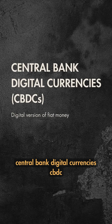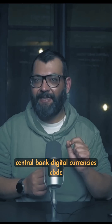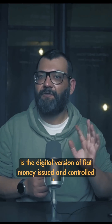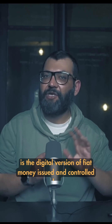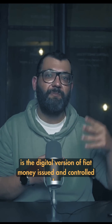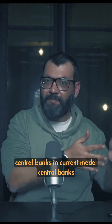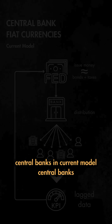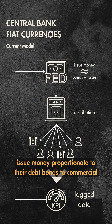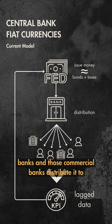Central bank digital currencies, CBDC, is a digital version of fiat money issued and controlled by central banks. In the current model, central banks issue money proportioned to their debt bonds to commercial banks, and those commercial banks distribute it to the economy.